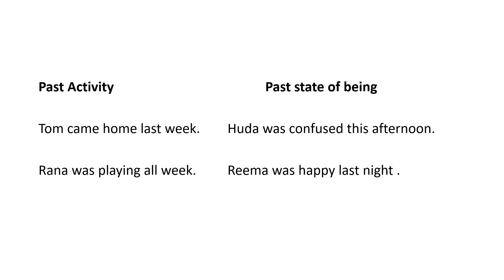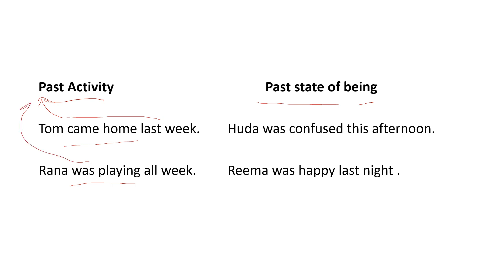Here are some more examples of past activity and past state of being. Tom came home last week. This is something which happened in the past — when did it happen? Last week. And it's an action: he came home. Rana was playing — she was playing before now, in the past, and it's an action which happened in the past.